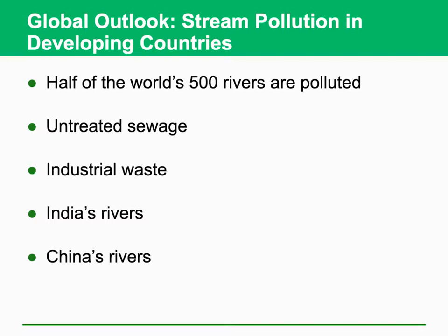Half of the world's 500 rivers are seriously polluted due to untreated sewage and industrial waste. The example is India's rivers and China's rivers — due to rapid industrialization without proper treatment of these pollutants, river water quality is not very good. Engineers in these countries are working to reduce the concentration of water pollutants and recover the water quality in these rivers and lakes.